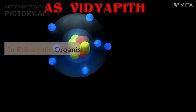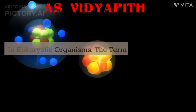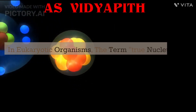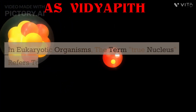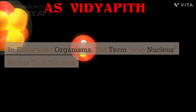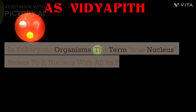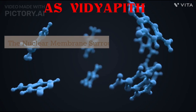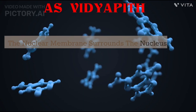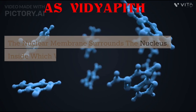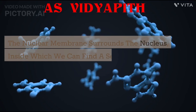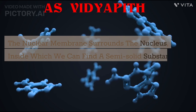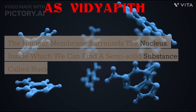In eukaryotic organisms, the term 'true nucleus' refers to a nucleus with all its parts. The nuclear membrane surrounds the nucleus, inside which we can find a semi-solid substance called nucleoplasm.